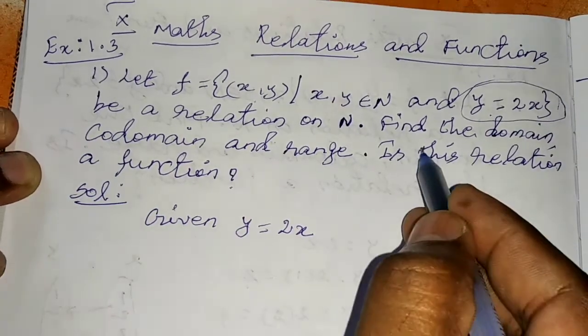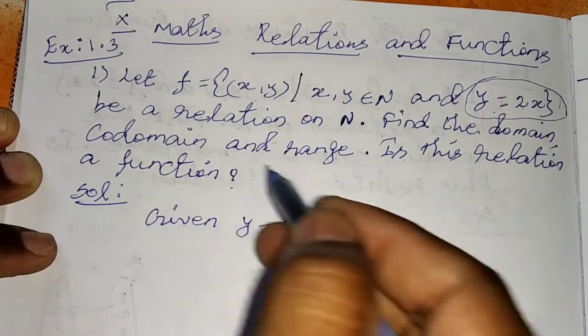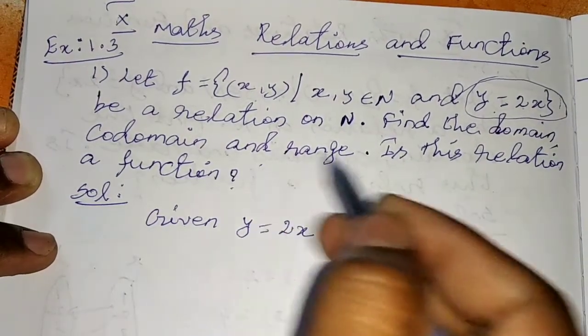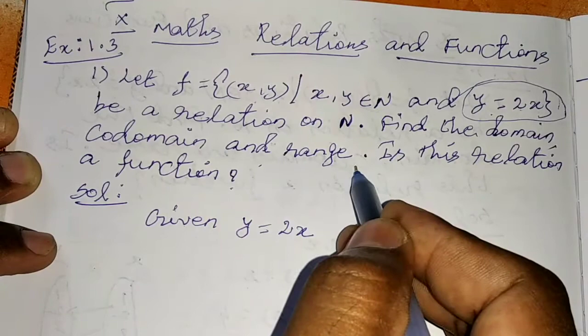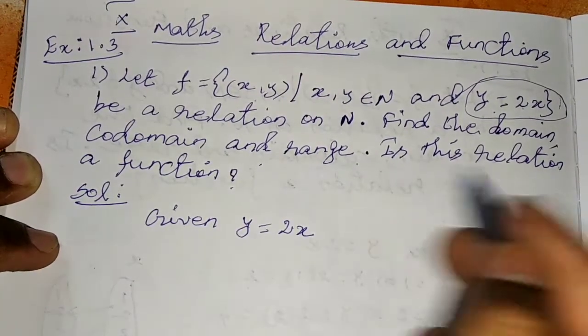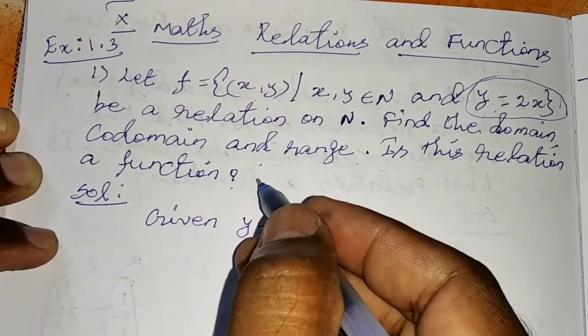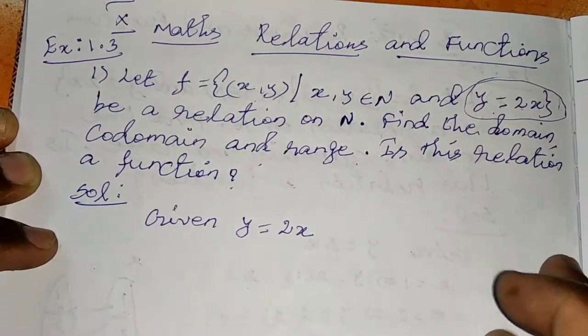Let's find the domain, codomain, and range. Is this relation a function? Let's check.